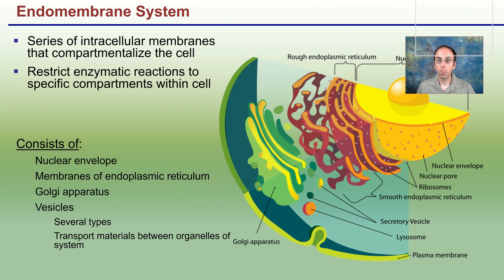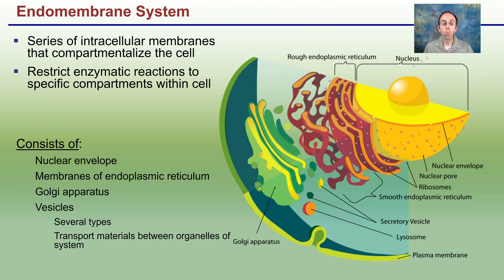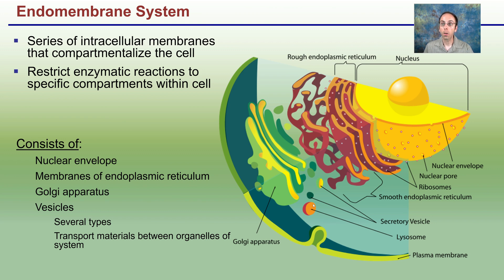The endomembrane system is a series of membranes that work together within the cell. Because we have these membranes, we have these little compartments, and this allows isolation of specific components within the cell. The true system involves the nucleus with the nuclear envelope, the rough and smooth ER, the Golgi apparatus, and the vesicles. They're arranged in this sequence to allow genes in the nucleus to produce final proteins that may be used within the cell or excreted outside it.